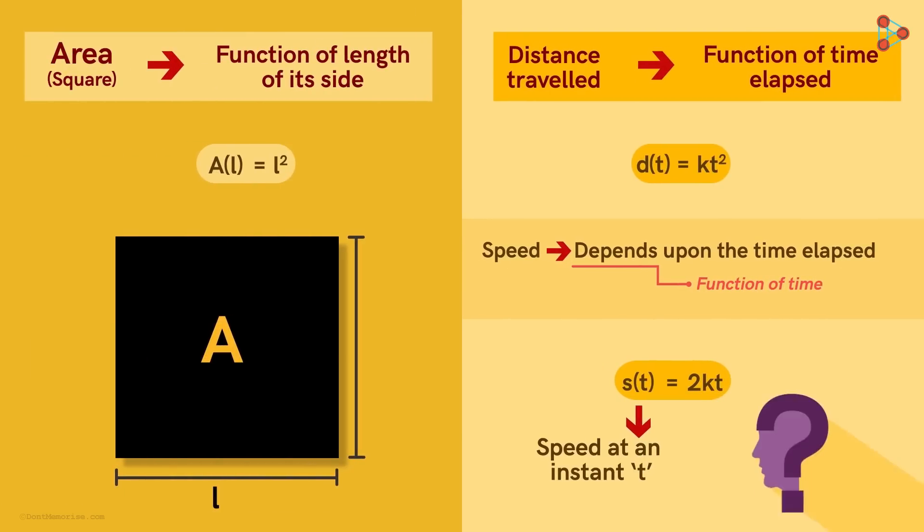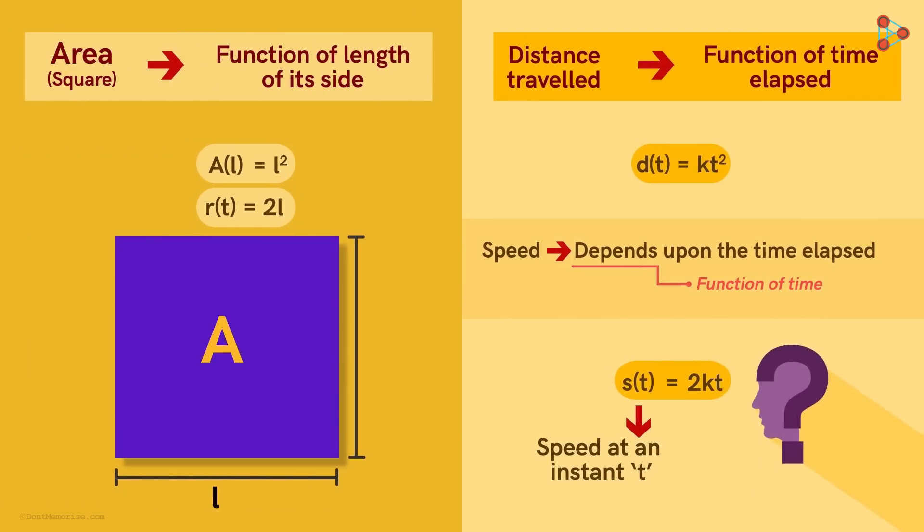But now, what does this speed function mean in the case of a square? Here, the speed is the rate of the change in the distance travelled, with respect to time.